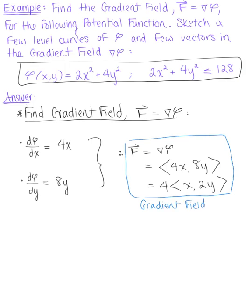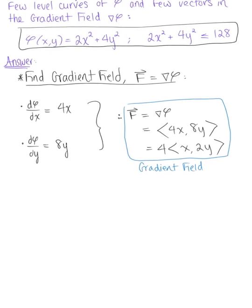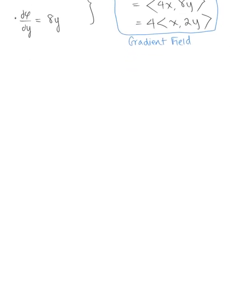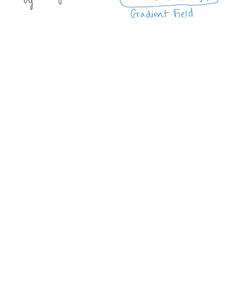Now that we have the gradient field, we want to go ahead and sketch some level curves for our potential function, as well as some of the vectors that exist in our field. To do that, we need to identify the level curves.